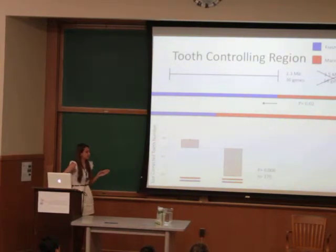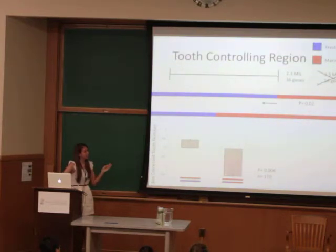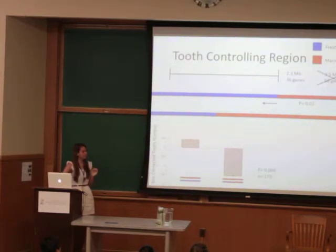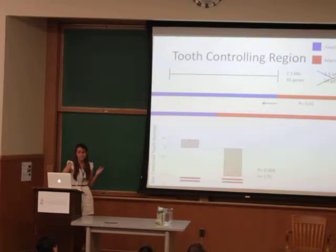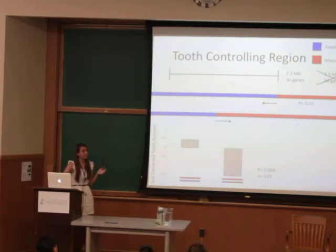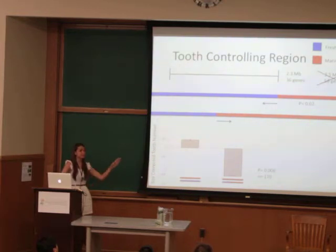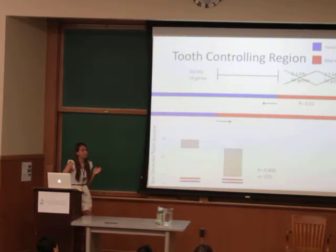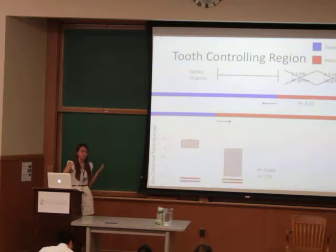The recombinant chromosome in this case is acting like a marine chromosome, because the marine recombinant class has significantly fewer teeth than their heterozygous siblings. This told us that the result mapped to the right. This eliminated all the genes to the left of the recombination breakpoint, narrowing down the region to 560,000 base pairs and only 28 genes.